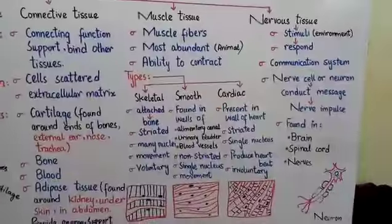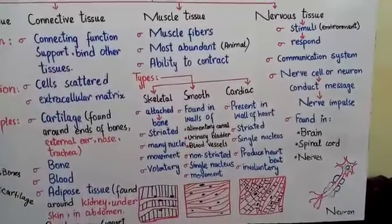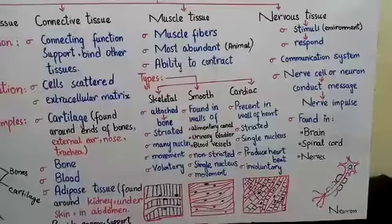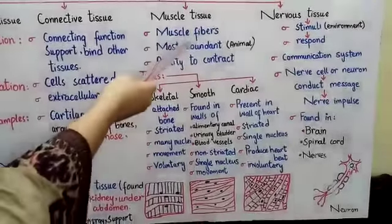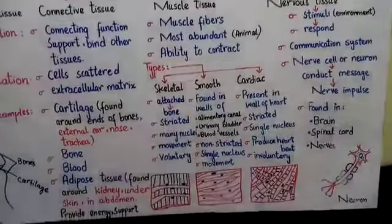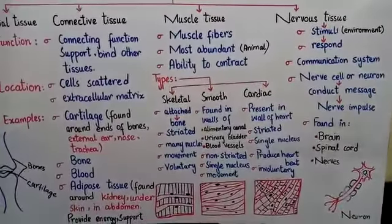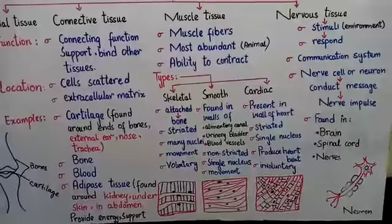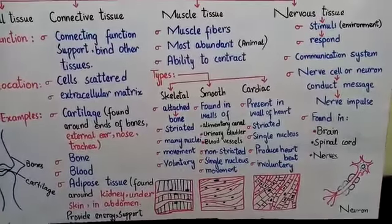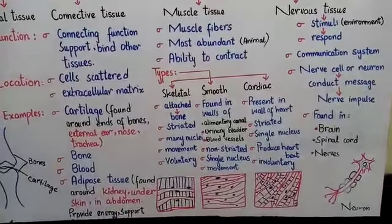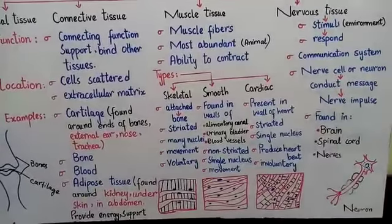The next type of animal tissue is muscle tissue. Muscle tissue consists of bundles of long cells called muscle fibers. Your muscles work with two types of systems — the skeletal system and the muscular system — working together in coordination, which we call the musculo-skeletal system. They provide your body movement.